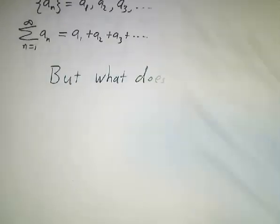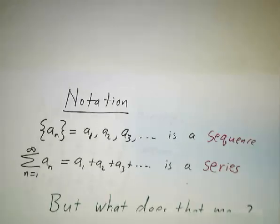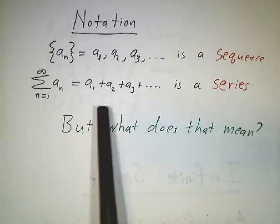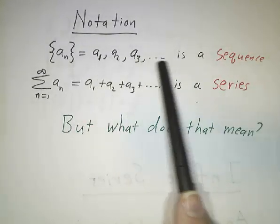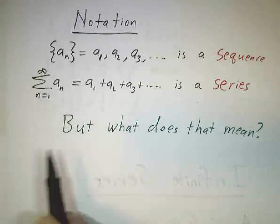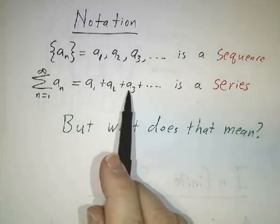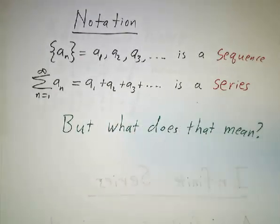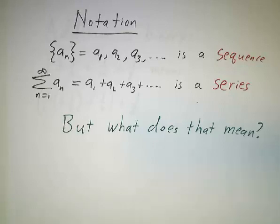In general, let's develop our notation. You start off with a sequence — a sequence is just a list of numbers: A1, A2, A3, and so on. The series is the sum of those numbers: the first plus the second plus the third plus the fourth, on forever. The trouble is, what does it mean to add up an infinite number of numbers?